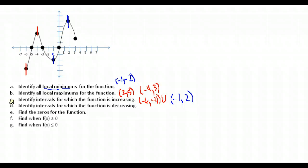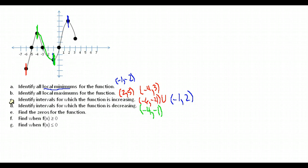Next, find the intervals where the function is decreasing — where the graph goes downward, or has a negative slope. From x = -4 to x = -1, the graph is going downward, so that's one decreasing interval. The graph also decreases at the end from x = 2 to x = 3. So the two decreasing intervals are (-4, -1) and (2, 3).